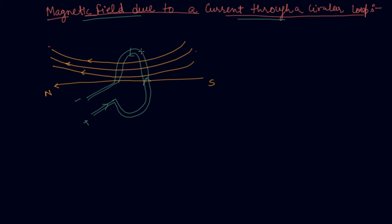Because it always tends to form a closed loop. Similarly, it is here in the downward side. So this is the pattern of the magnetic field around a current through a circular loop.